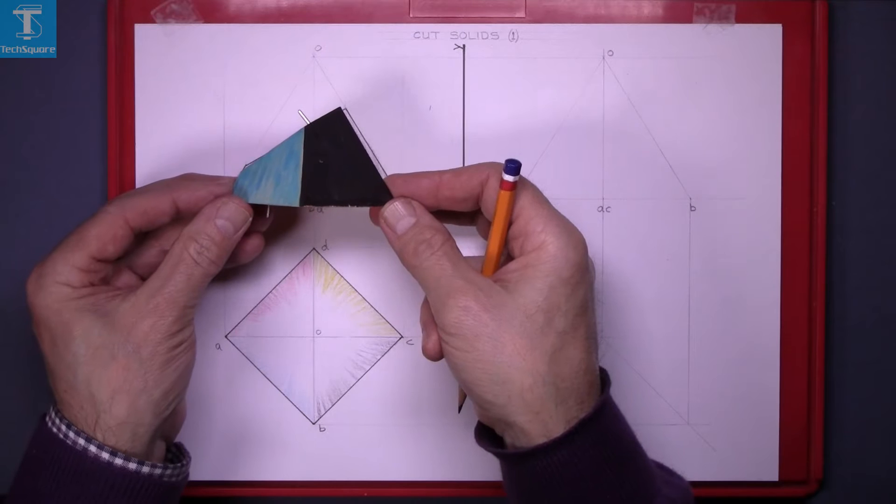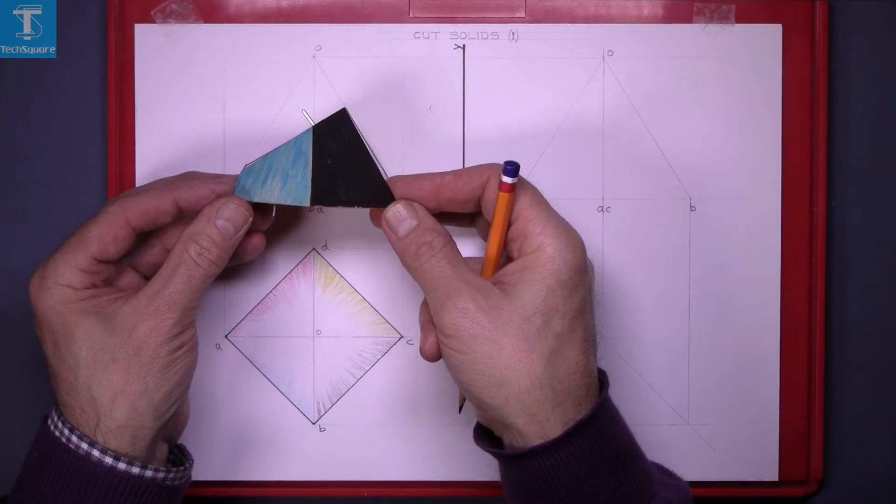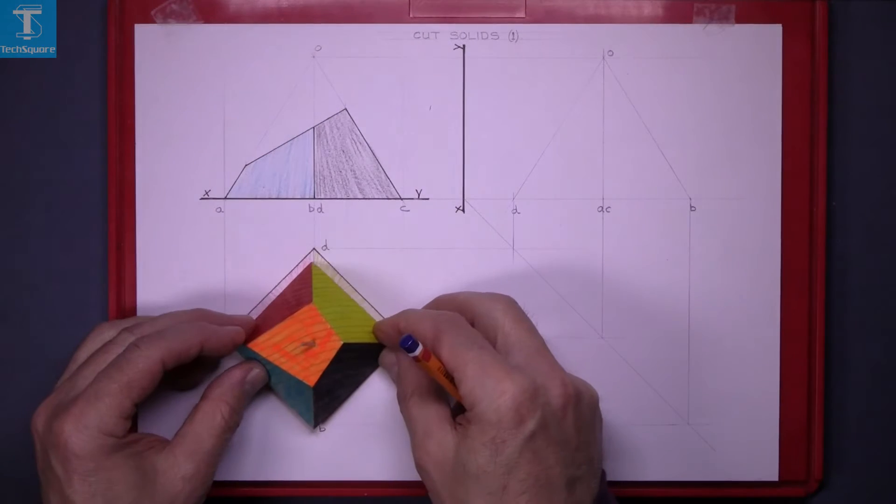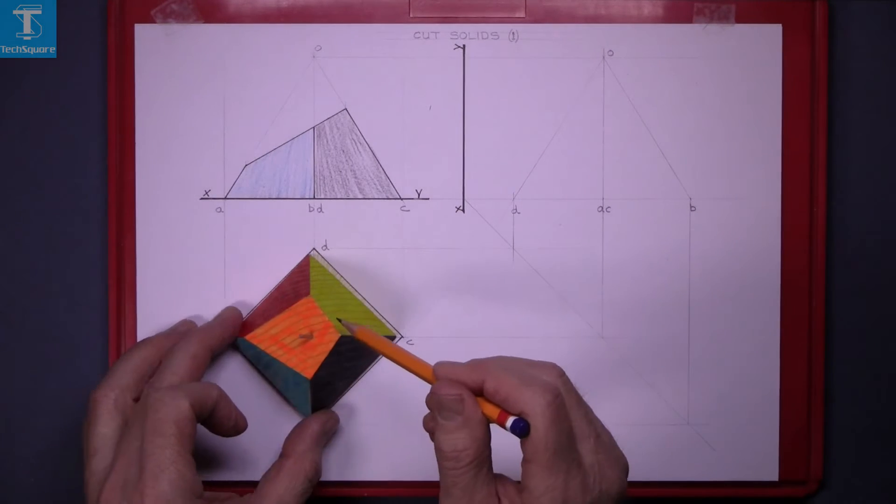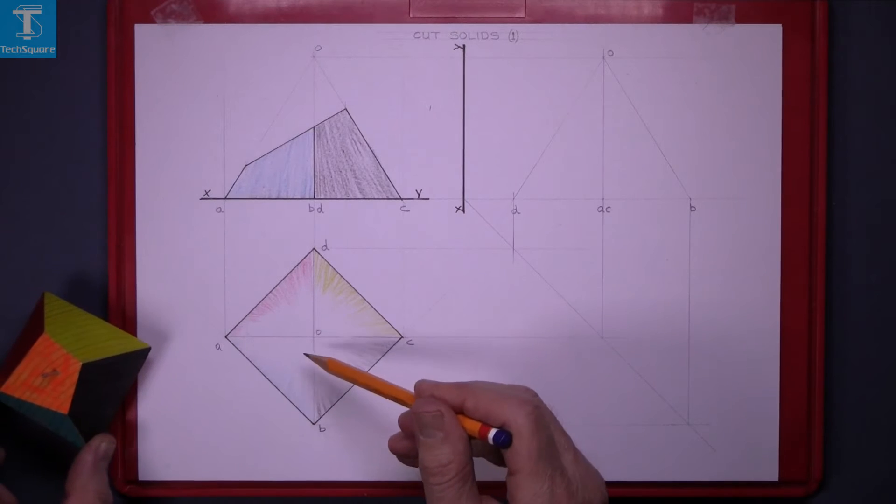The elevation is looking directly at the front of it like that and the plan is looking directly down on it. What we are asked to do is get the shape in the plan.